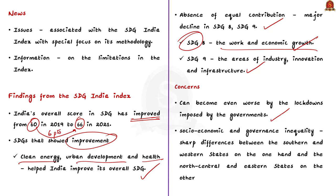SDG 8 also showed a sharp difference between the Southern and Western states on one hand and North, Central and Eastern states on the other. This is serious because it points to socio-economic and governance inequality across the country.